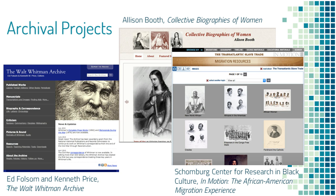One part of digital humanities is archival projects of all kinds, and audiovisual work really fits into this. Here are three examples: the Walt Whitman Archive, one of the first digital humanities projects at the University of Nebraska; Collective Biographies of Women, which is mostly text-based; and the Schomburg Center's 'In Motion: The African American Migration Experience,' which has images and sound.